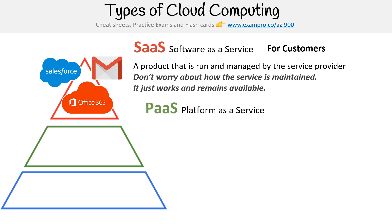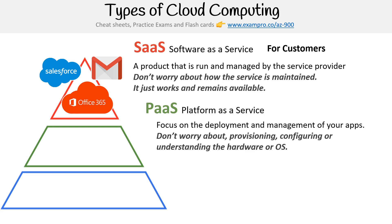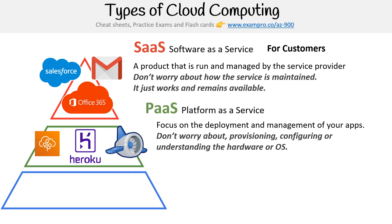The next category is Platform as a Service, abbreviated as PaaS. Here we focus on the development and management of your applications. You don't worry about provisioning, configuring, or understanding the hardware or OS. This is really for people that are building apps but don't think about any of the infrastructure underneath. Services like this would be Elastic Beanstalk on AWS, Heroku, which is very popular amongst junior developers for launching web apps, and Google App Engine. Platform as a Service makes it easy for developers to build apps on the cloud without worrying about all the stuff underneath.